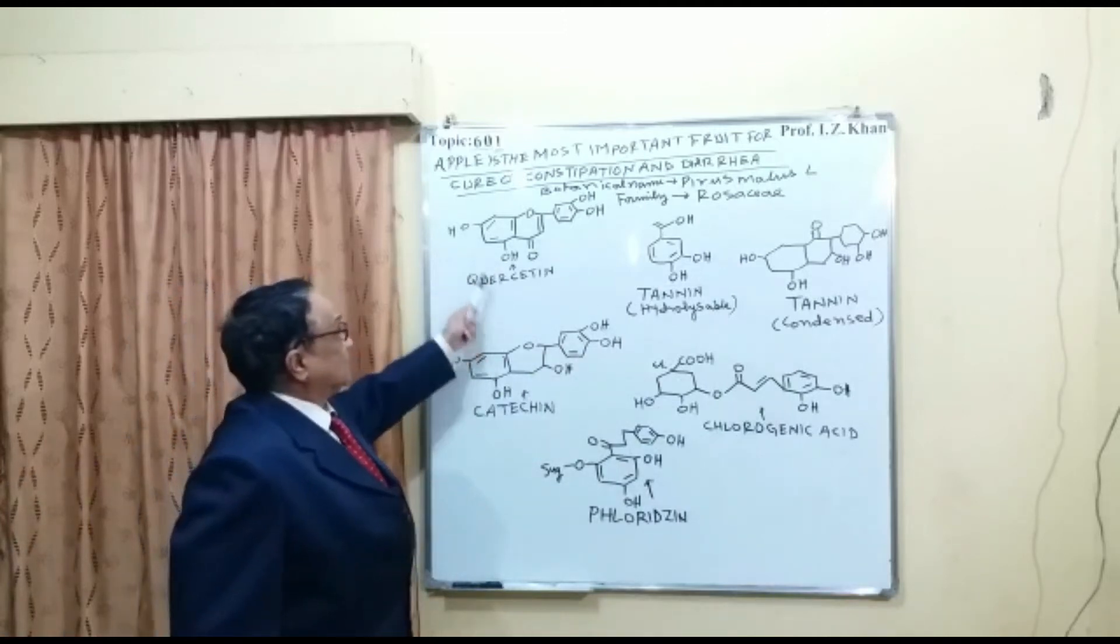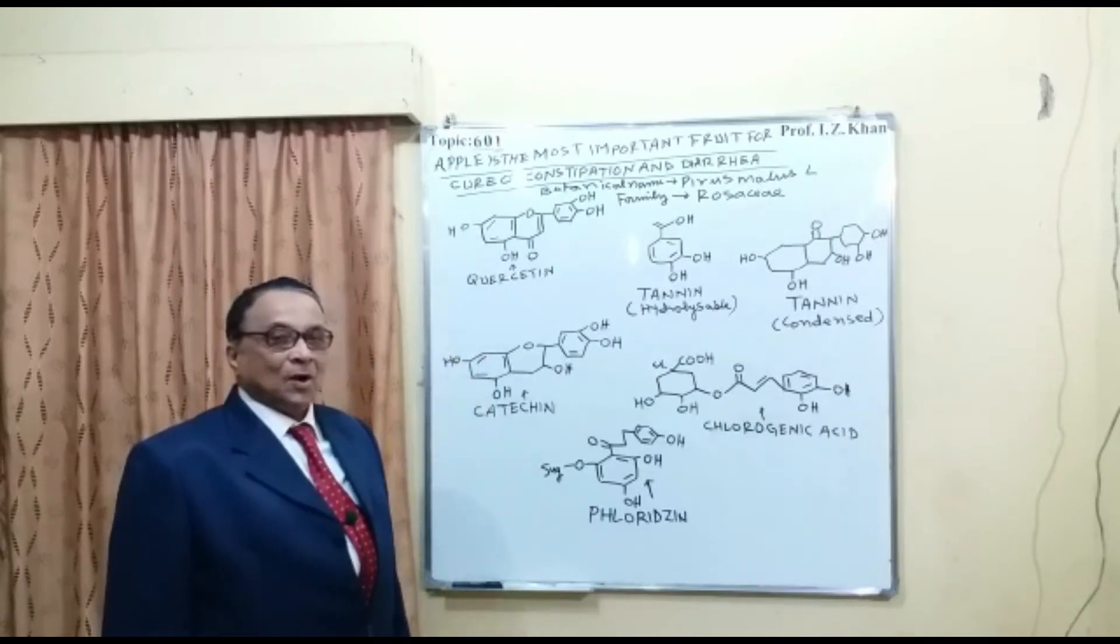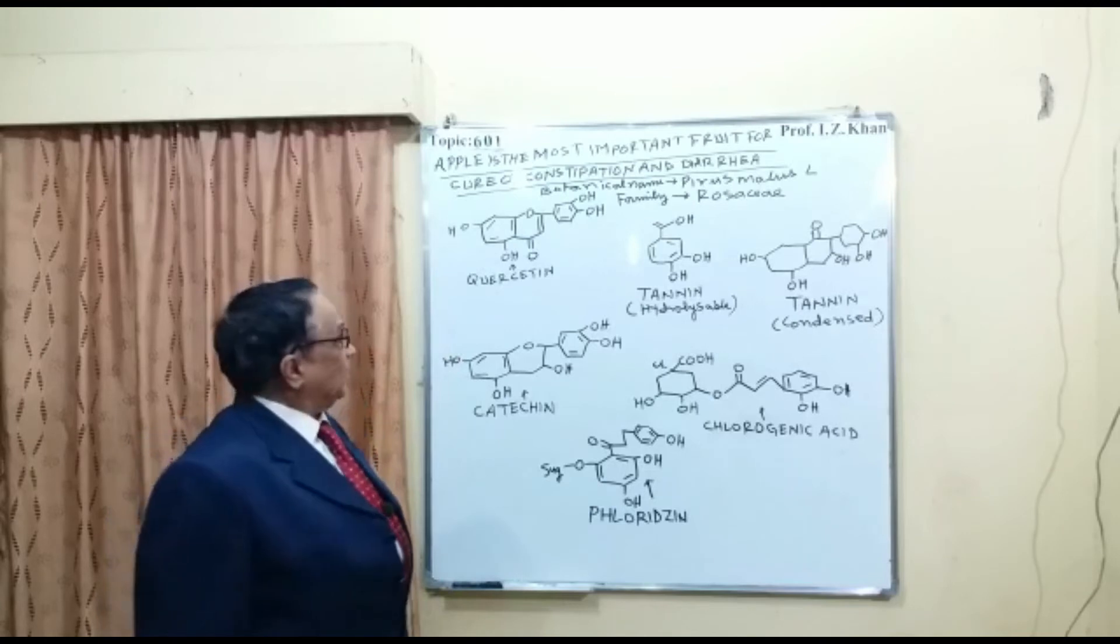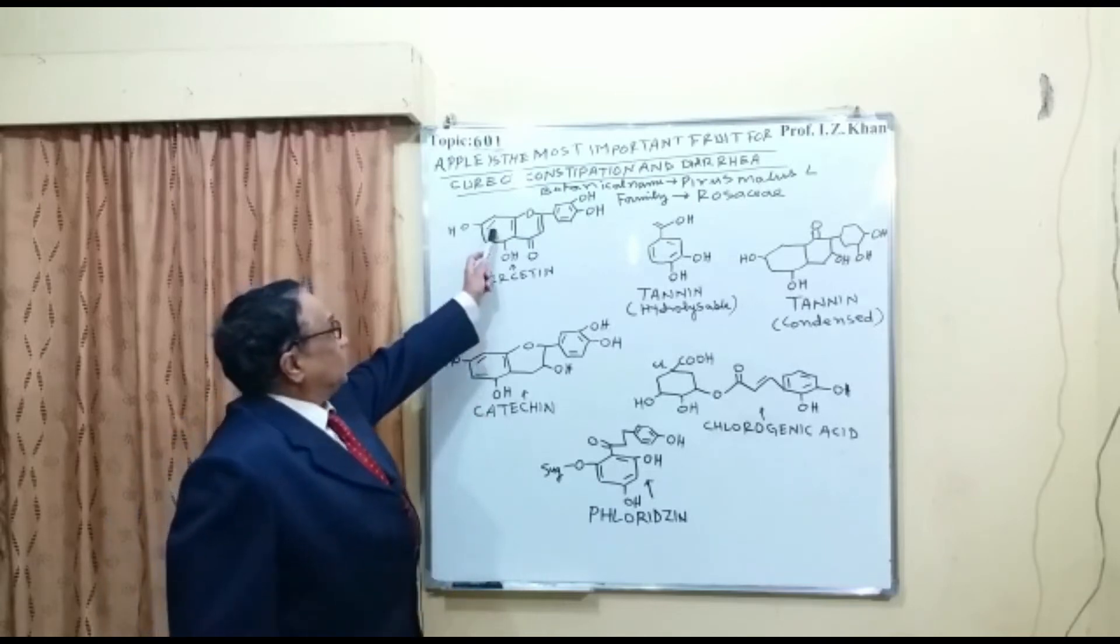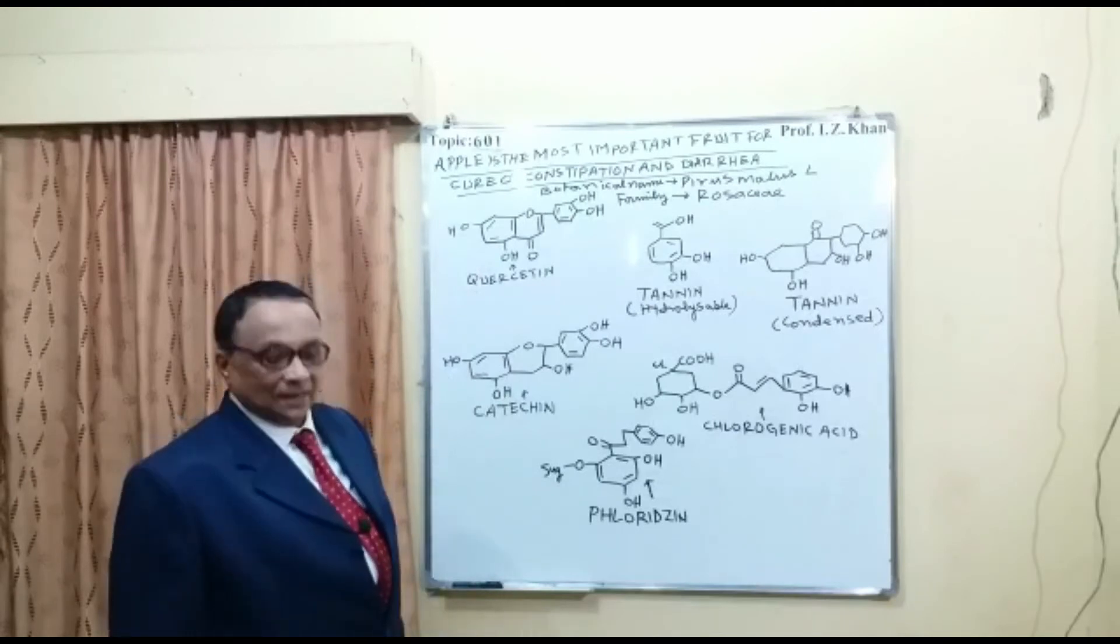First is quercetin. This is the main medicinal compound in apple, which is having benzopyrone nucleus with four hydroxy groups attached to aromatic ring.